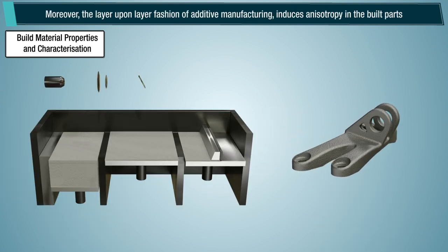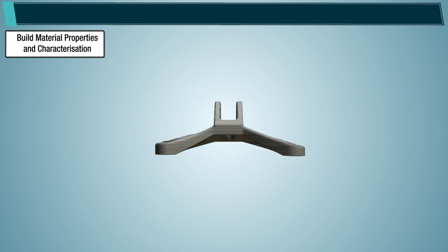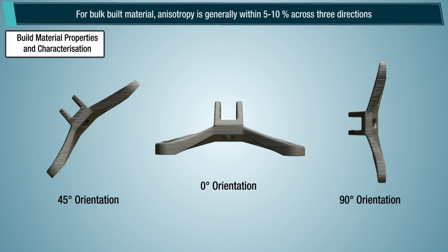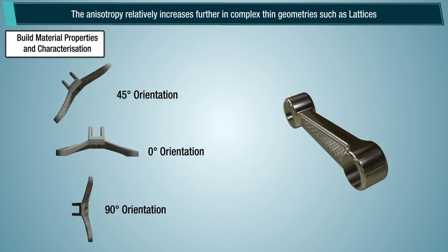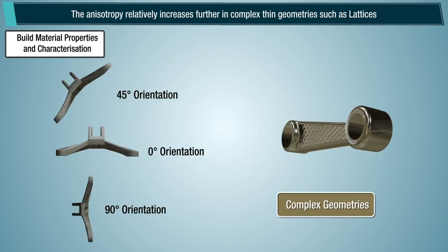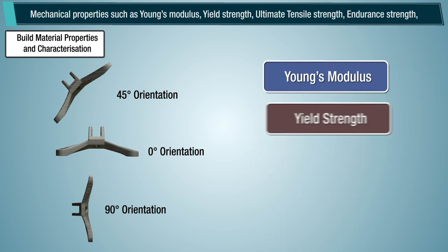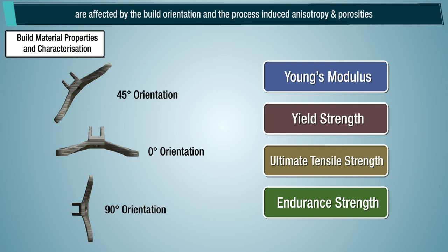The layer-upon-layer fashion of additive manufacturing induces anisotropy in the built parts. Unlike isotropic materials, properties of additively manufactured material change with direction. For bulk built material, anisotropy is generally within 5-10% across three directions. The anisotropy relatively increases further in complex thin geometries such as lattices. Mechanical properties such as Young's modulus, yield strength, ultimate tensile strength, and endurance strength are affected by the build orientation and the process-induced anisotropy and porosities.